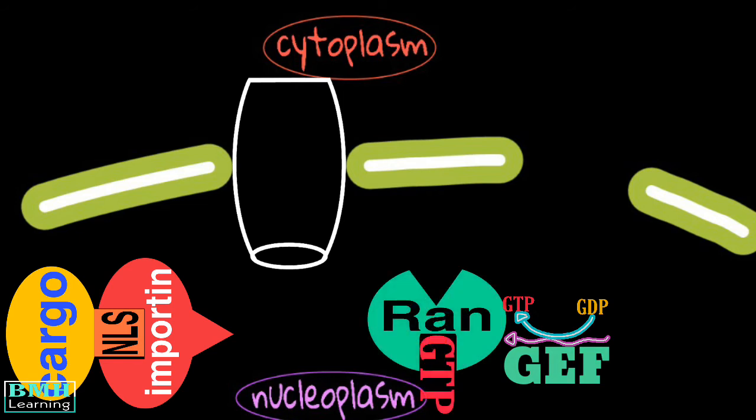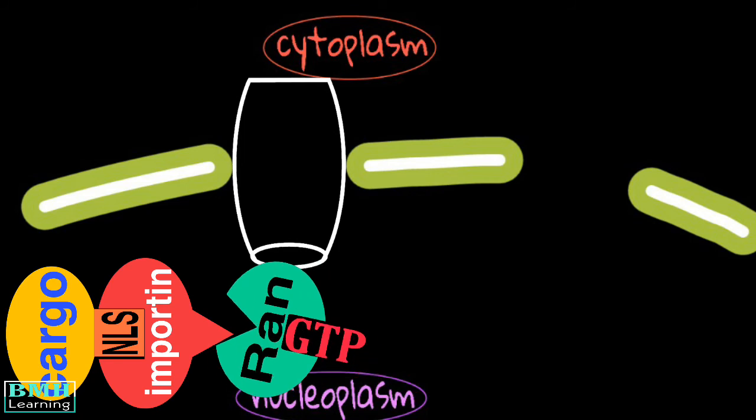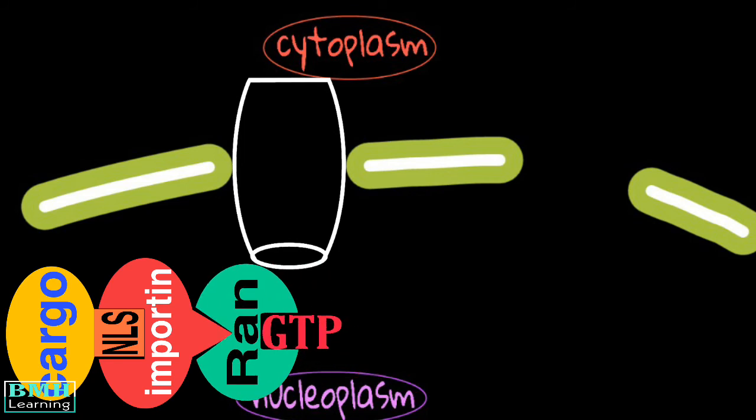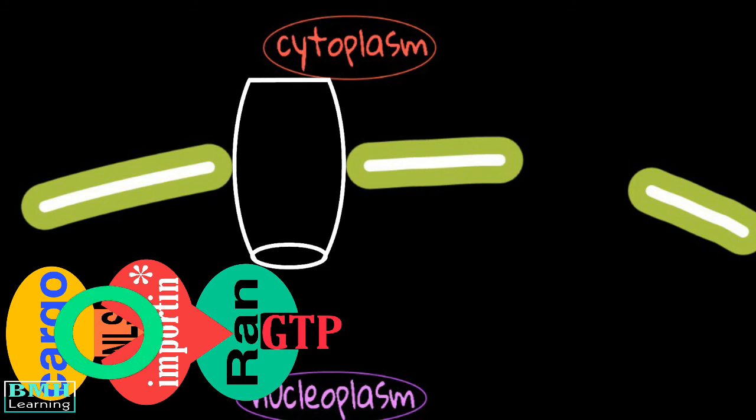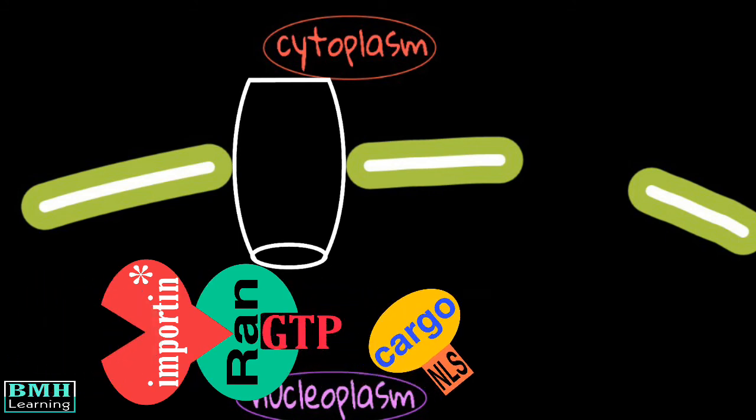This RAN GTP can bind to the importin. But there's a twist. The binding of the RAN GTP to the importin induces a conformational change in the importin protein, which shows the importin receptor cannot bind to the protein anymore. And hence, the protein is released.